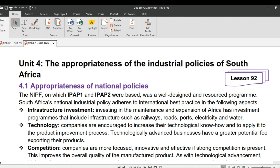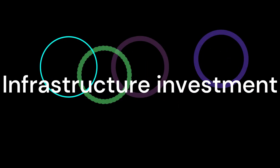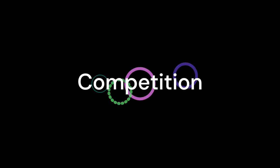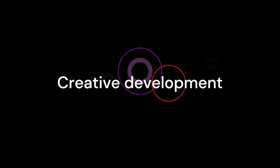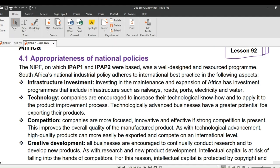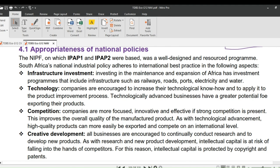South Africa's national industrial policy adheres to international best practice in the following aspects: infrastructure investment, technology, competition, creative development, and human capital. Starting with infrastructure investment: investing in the maintenance and expansion of infrastructure includes programs such as railways, roads, ports, electricity, and water.